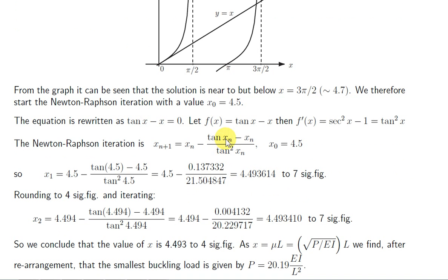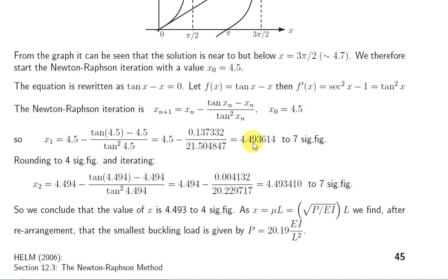So it goes into the right-hand side, and we get out x2. So we get this here, 4.493410. So we can see that to three decimal places, or four significant figures, we get 4.493.